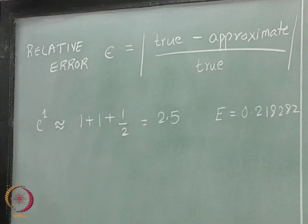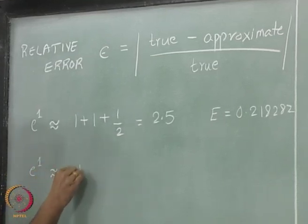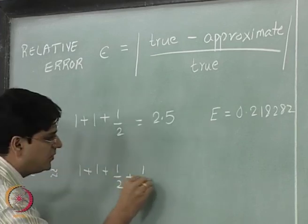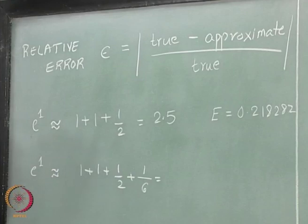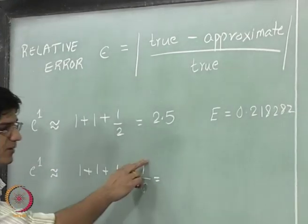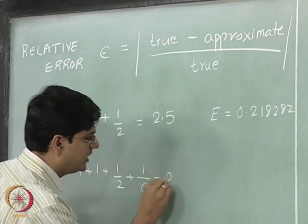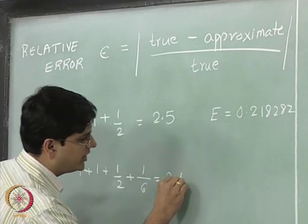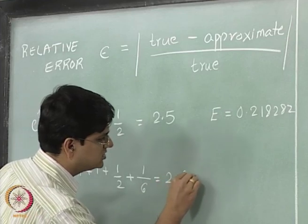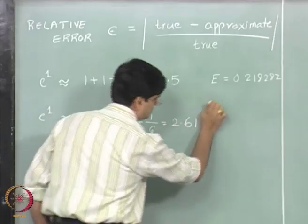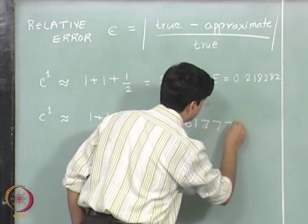We can include additional term. When we include the fourth term, what we will find is the error is going to be 1 by 2 plus 1 by 6, it is going to be 2.5 plus 0.18. That will be 2.617778.